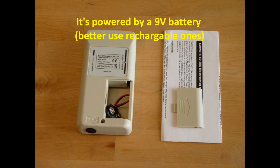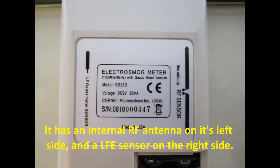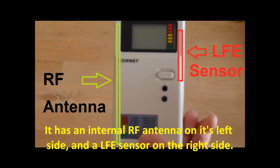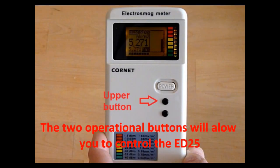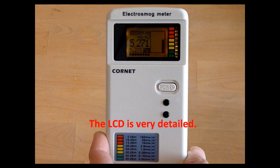It's powered by a 9V battery. I recommend that you use rechargeable ones. It has an internal RF antenna on the left side and the LF sensor on the right side. The two operational buttons will allow you to control the ED25, and the LCD is very detailed.